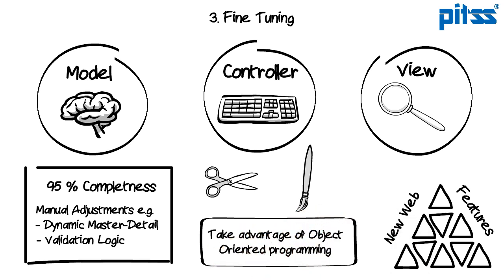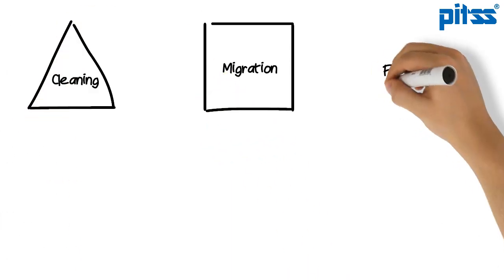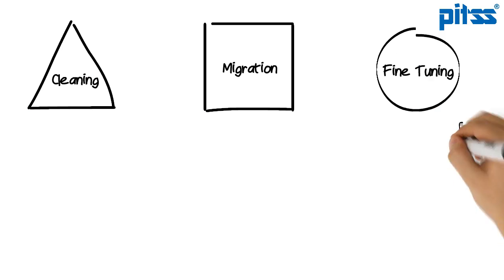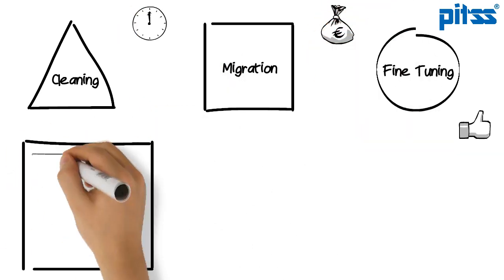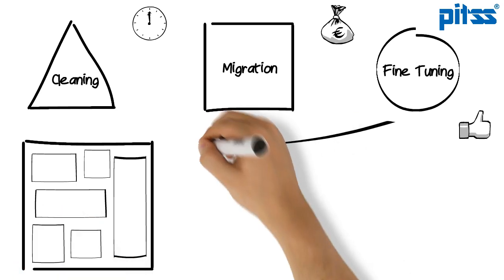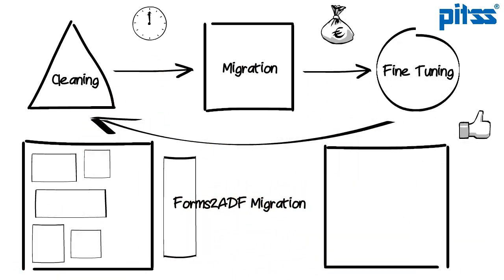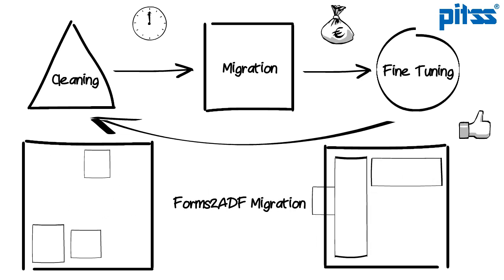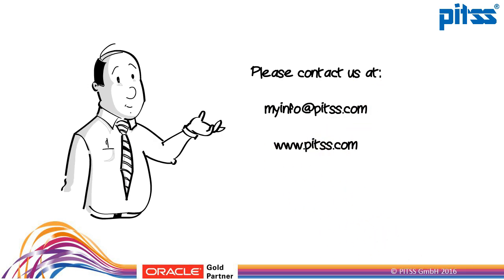Let's summarize the PITS process model to ADF. The cleaning, migration, and fine-tuning ensures that you will have a high-quality and maintainable ADF application that was migrated in time and on budget. When you cluster your application, you are able to repeat all phases cluster by cluster. With this strategy, you can migrate your Forms with your own pace to ADF and provide the functionality with the most value to your end users. If you'd like to have more information, please contact us at myinfo@pits.com or visit our website.